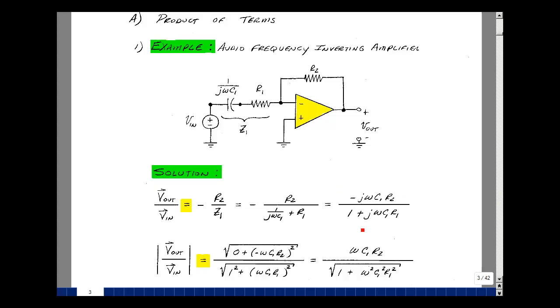The Bode plot is sketching the magnitude and angle of this transfer function versus frequency. The magnitude would be the ratio of the magnitude of the numerator divided by the magnitude of the denominator. That would be the real part squared, which is 0, and then minus omega C1 R2.